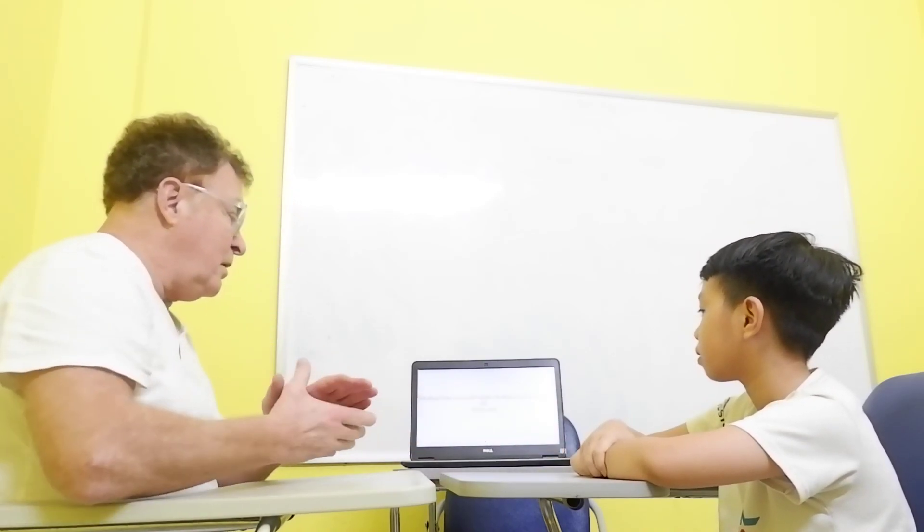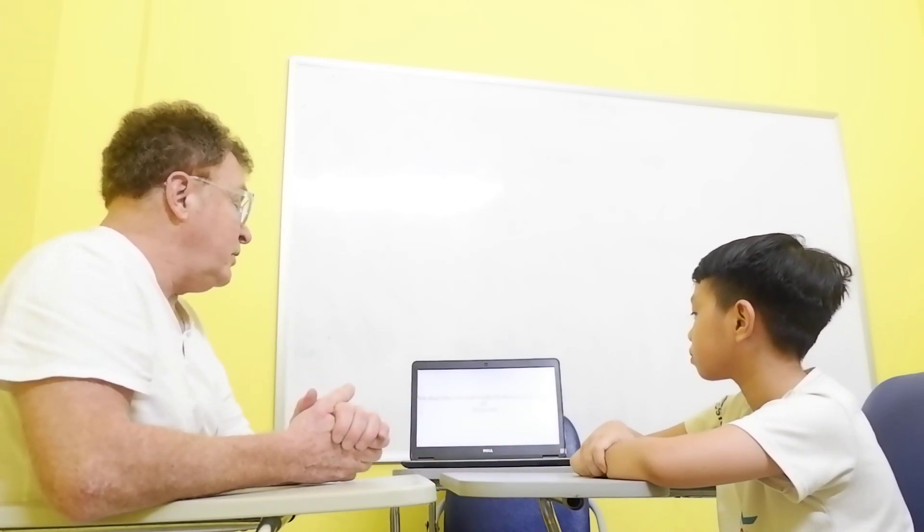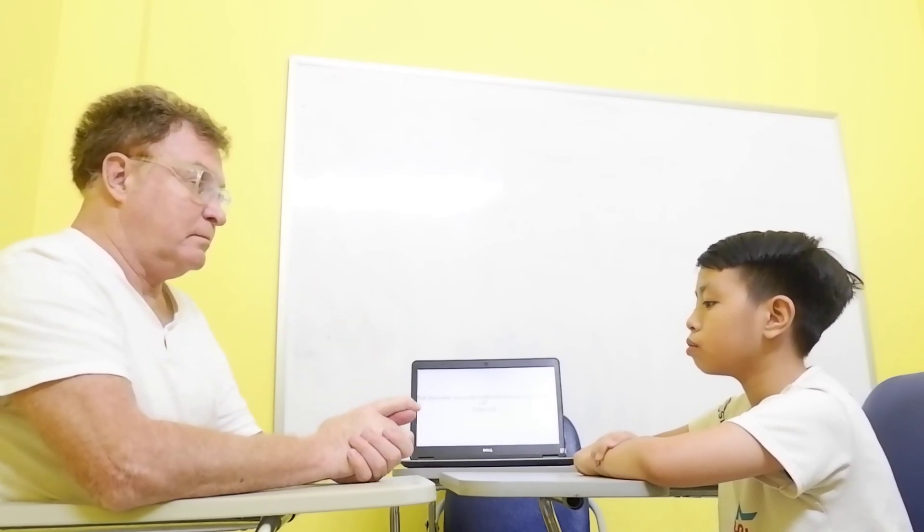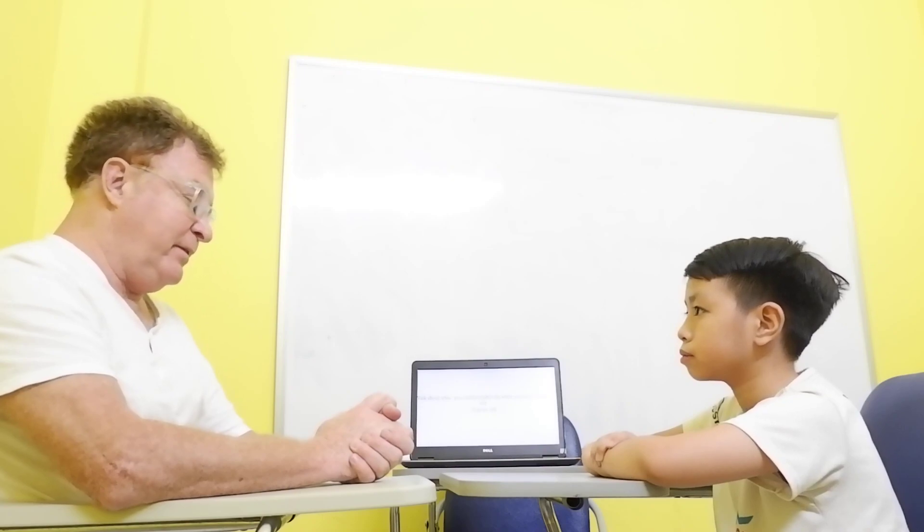Talk about what you could and couldn't do when you were five years old as opposed to being ten years old. When I was five years old, I couldn't write my school, but learn English, but now I could. Very good. Okay. Very, very good. Well then. Well done.